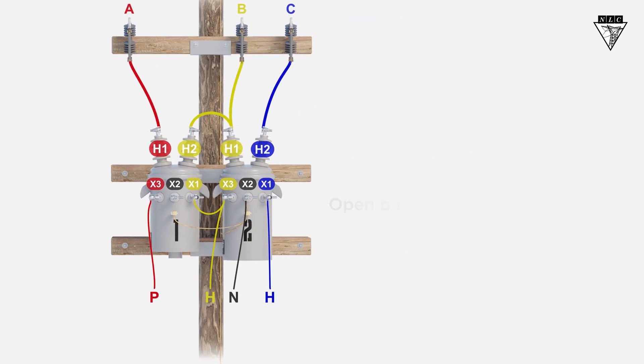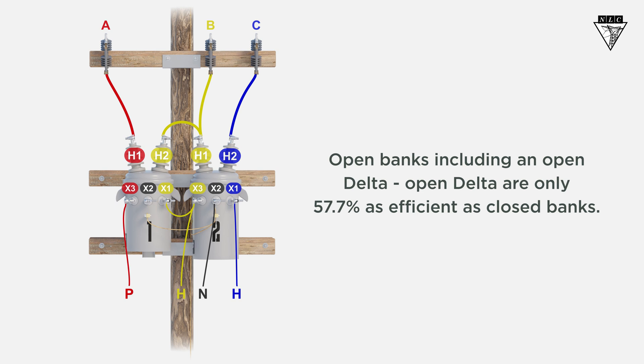It's important to remember, open banks, including an open-delta open-delta, are only 57.7% as efficient as closed banks.